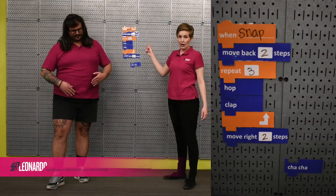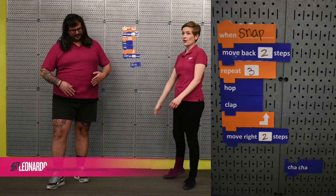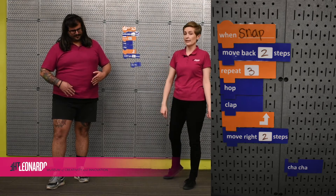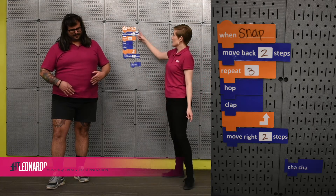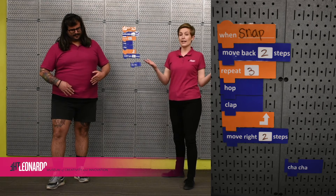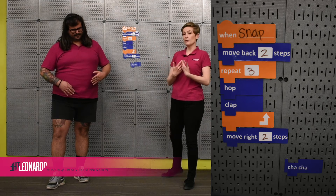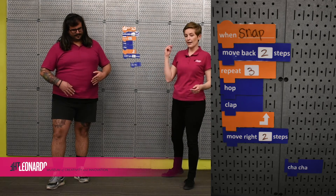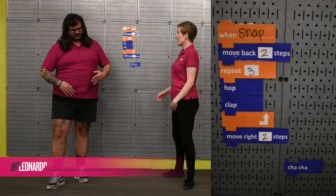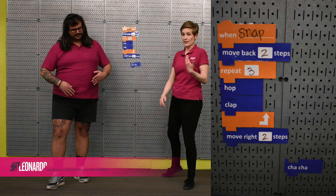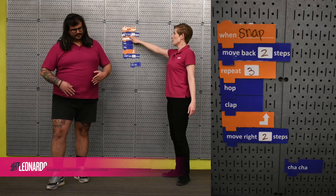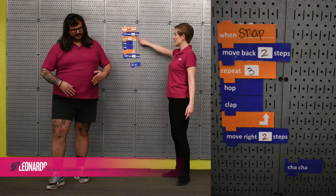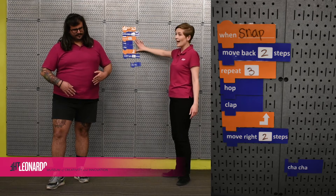Let's take another look at my algorithm and all of the sequence of instructions I have written up here. It says 'when snap' — that's the first thing that tells my computer: when I snap, I want this action to follow. The first action I have written is: move back two steps.